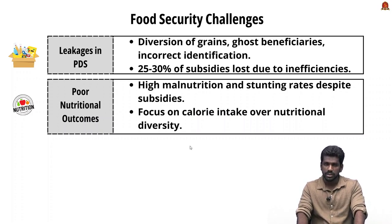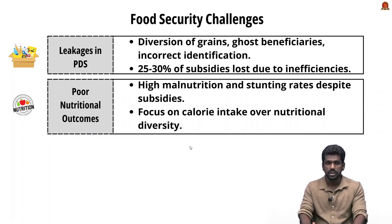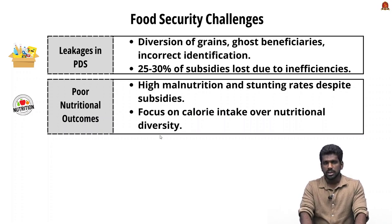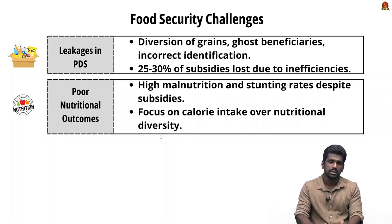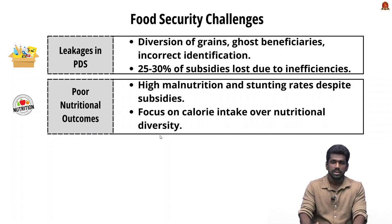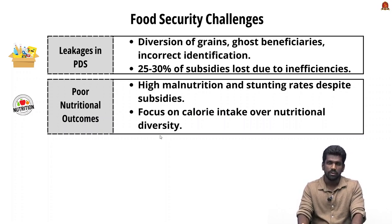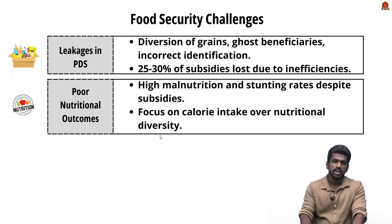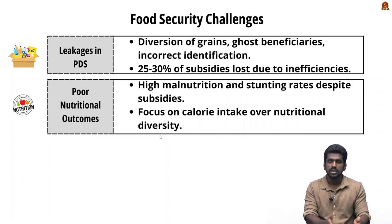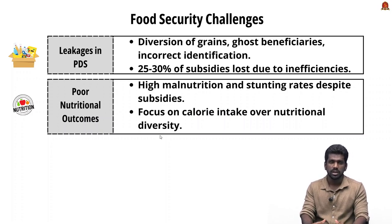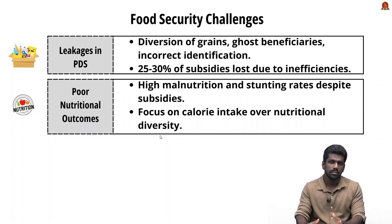There is heavy reliance on cereals in the food basket under India's food security system, which discourages diversification towards more nutritious crops like pulses, coarse grains, and vegetables. The rising cost of food subsidies also puts immense pressure on fiscal resources — in 2024-25, food subsidies alone are estimated to cost around ₹2 lakh crore, diverting resources from other critical areas like health, education, and infrastructure.